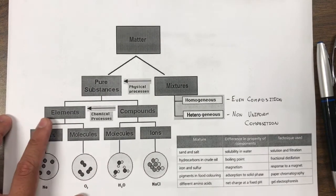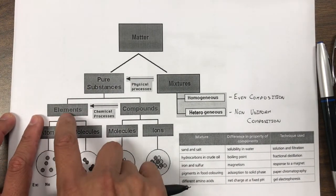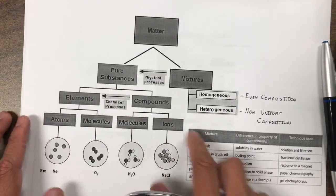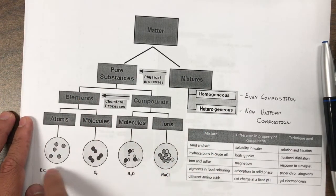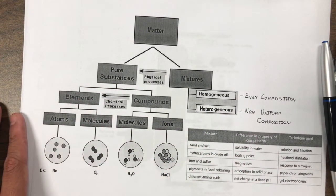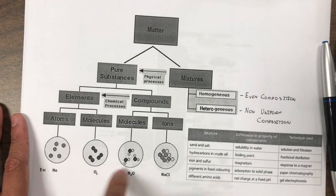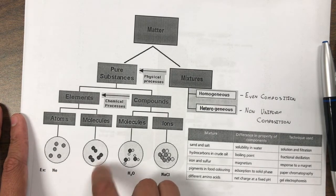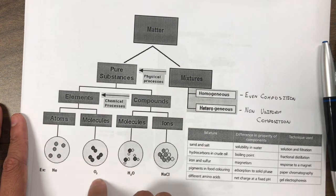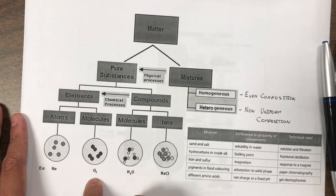Once we have our pure substances, those are distributed into elements and compounds. Elements are like atoms and molecules. Notice they're only made up of one type of element. So you have neon or an oxygen molecule, which is diatomic, has two atoms, but both those atoms are oxygen atoms.